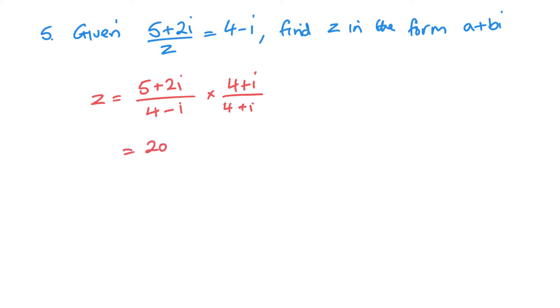So we've got 5 times 4 is 20, 5i plus 8i plus 2i squared. Just remember, I'm dealing with the top as if they're two brackets. 4 times 4 is 16. Then I get 4i and minus 4i, so that'll go. And then I get minus i squared. So 20 and the 2i is, this 2i here is going to be a negative 2 because of the i squared. So that is 18 plus 13i.